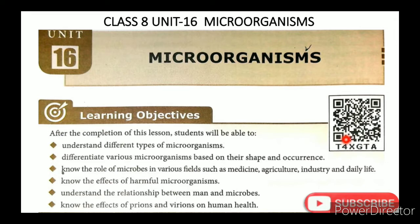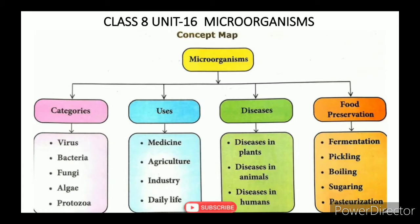The ICT corner link is in the description box. The classification of microorganisms simulation is available there. Concept Map: Micro-Organisms. In this lesson, you will have a total of 9 topics. The microorganisms are categorized into 5 types: virus, bacteria, fungi, algae, and protozoa.